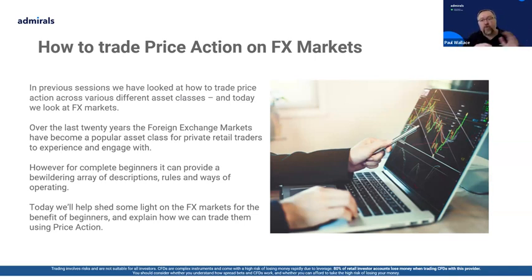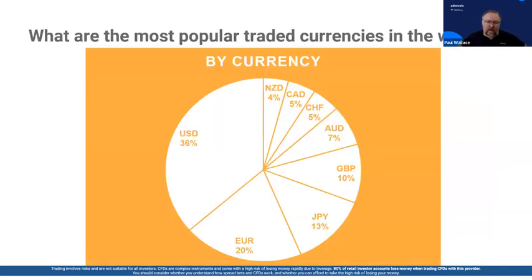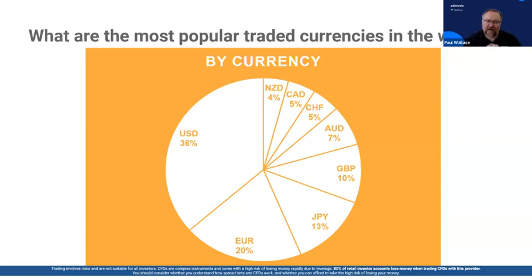As we go through and switch across to the live charts, we'll explain how we could trade FX using price action. The foreign exchange market — looking at the most popular traded currencies in the world — the big slice of the pie is taken by the USD, the US dollar. Then you're looking at the euro, the yen, sterling, Aussie, Swiss franc, Canadian dollar, and Kiwi dollar. Those are all called the majors — the US dollar trading against the majors — and they are the major traded currencies around the world.